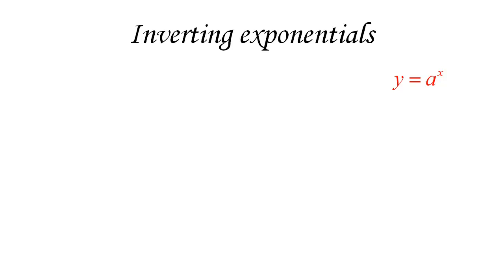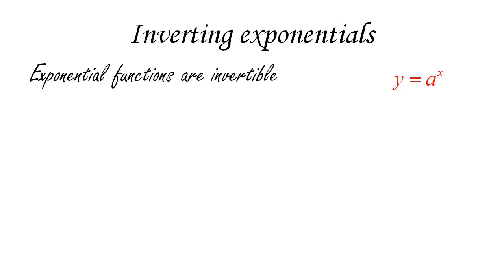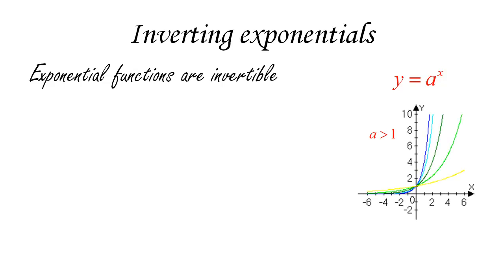We're going to start from exponential functions — the functions y equals a to the power x, where a is some positive number. These exponential functions are actually invertible, which can be seen quite easily by looking at their graphs. For a greater than one, exponential functions are all increasing, so they all pass the horizontal line test and are therefore all invertible.